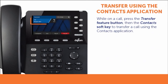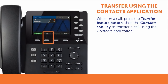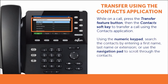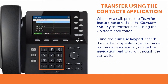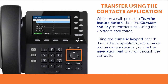While on a call, press the transfer button, then press the contact soft key. Search through your contacts using the keypad, entering a first name, last name, or extension number. Or you can scroll up and down using the navigation pad to find the contact.